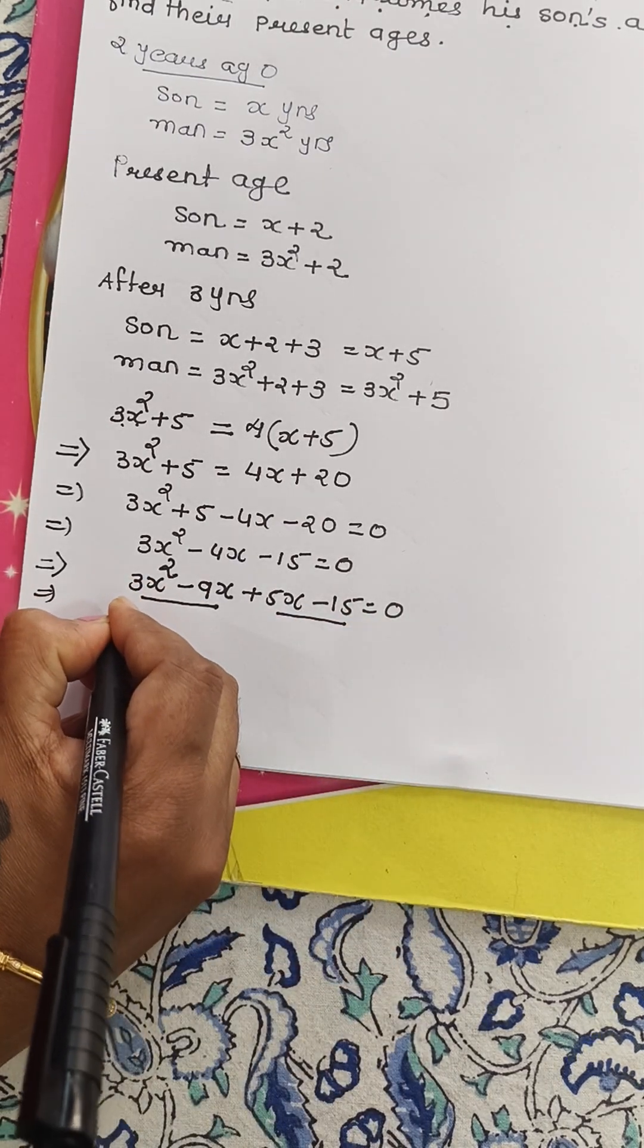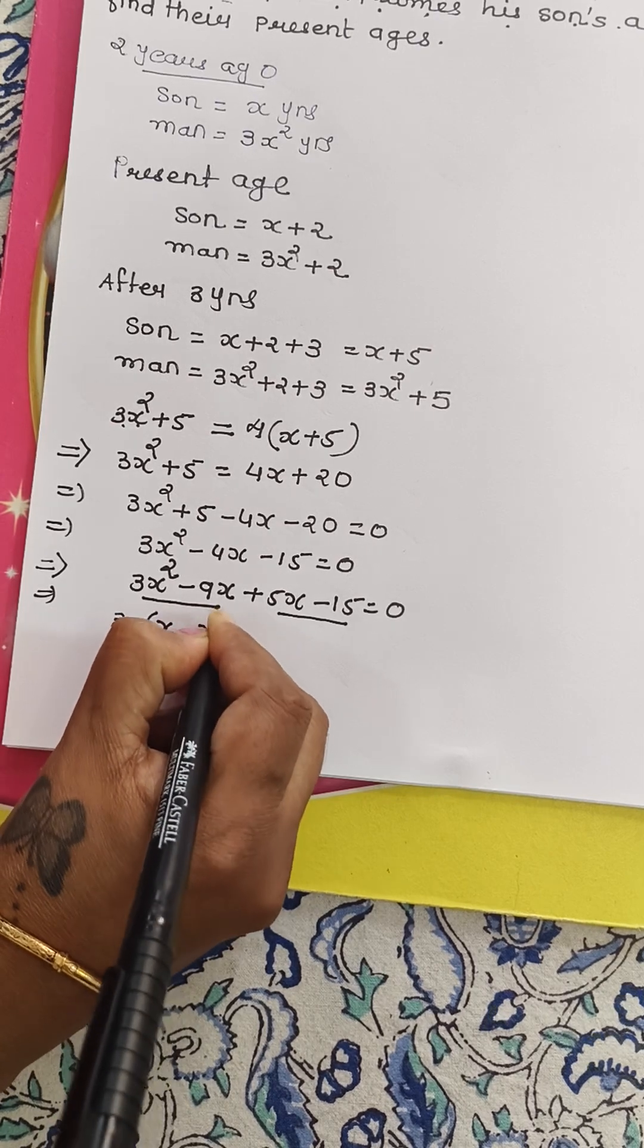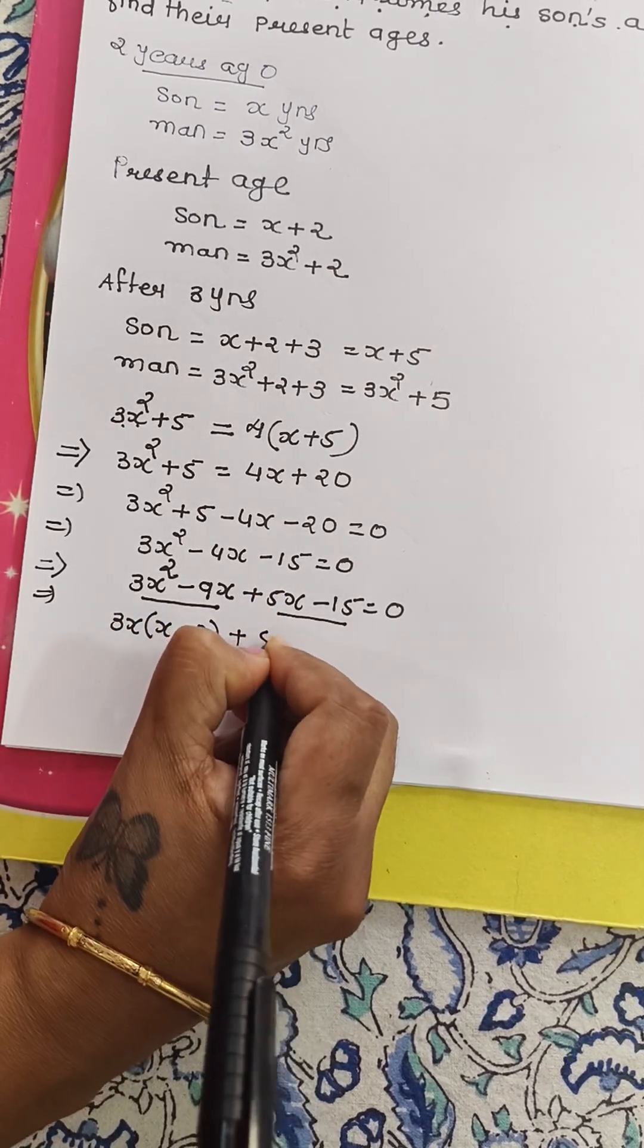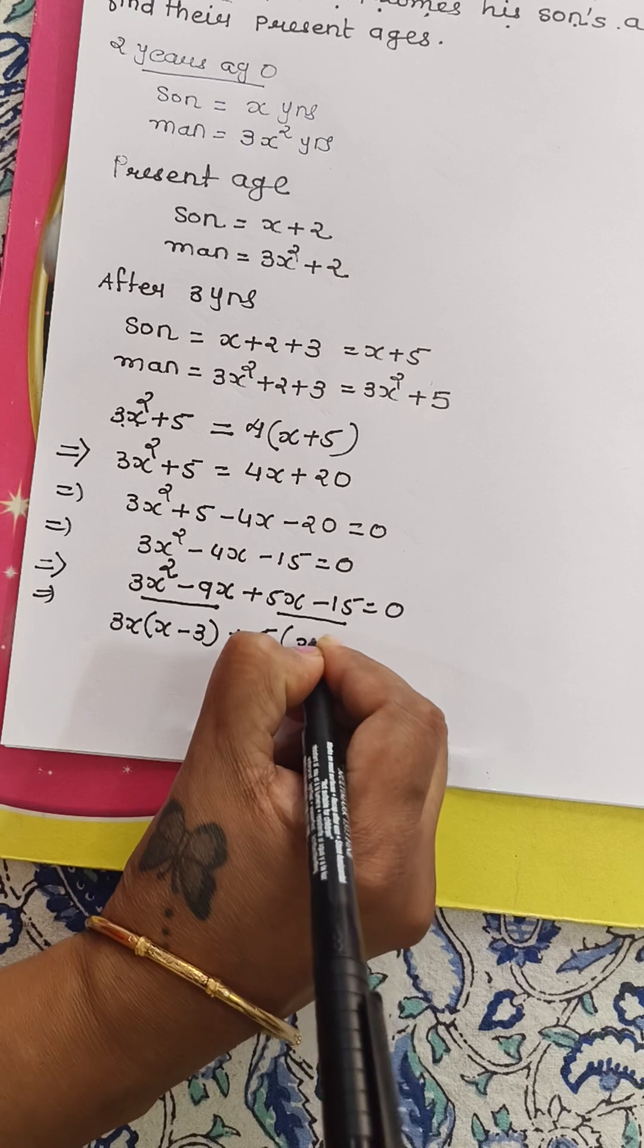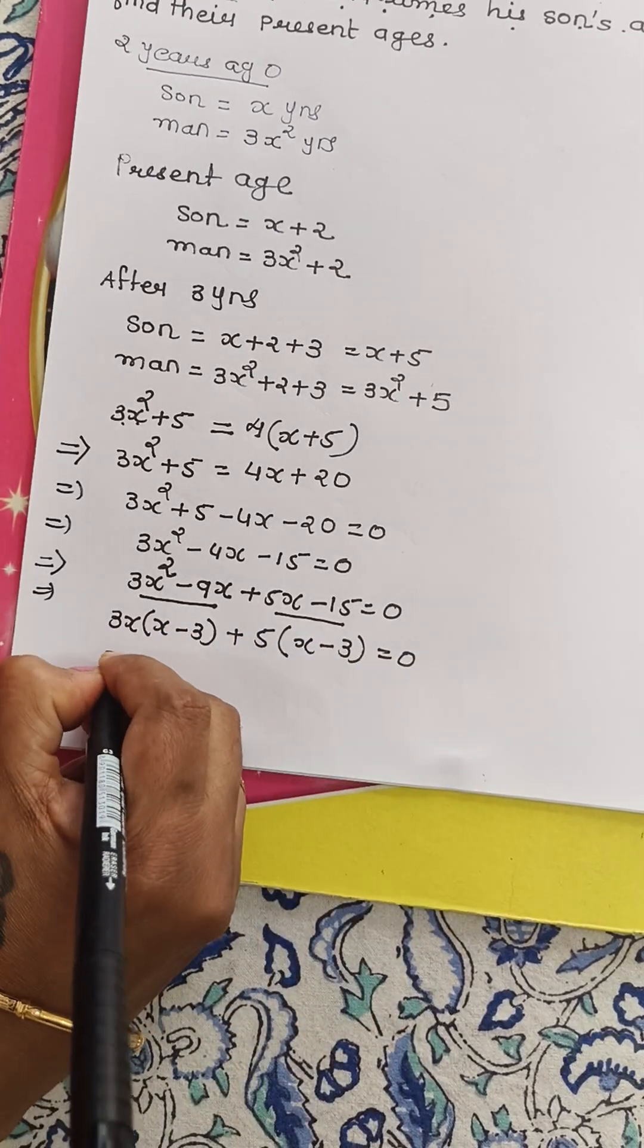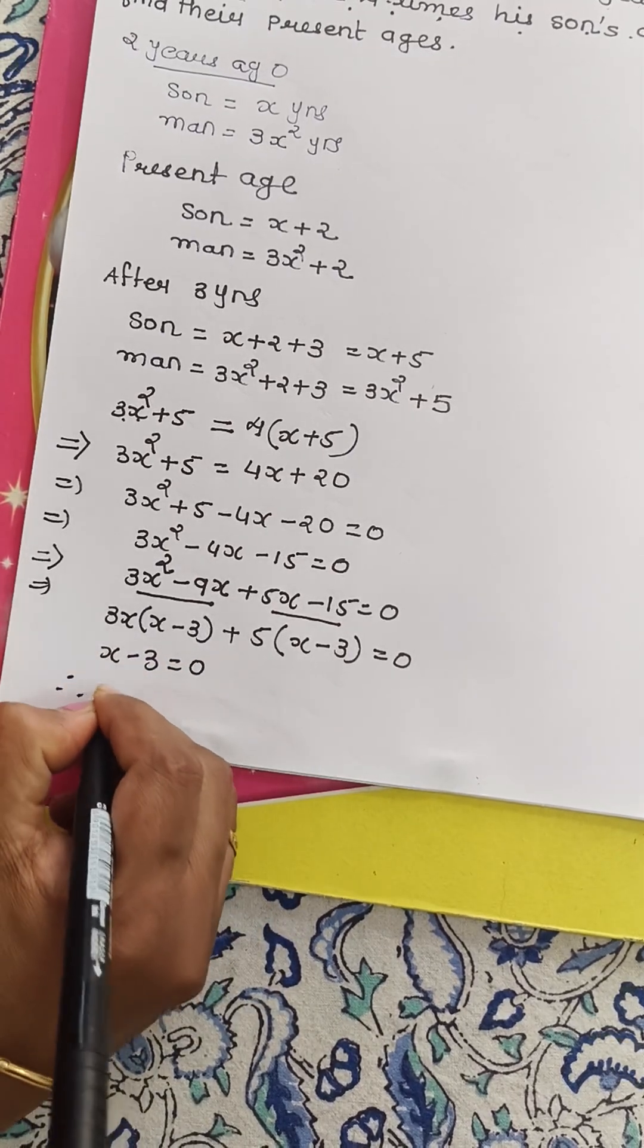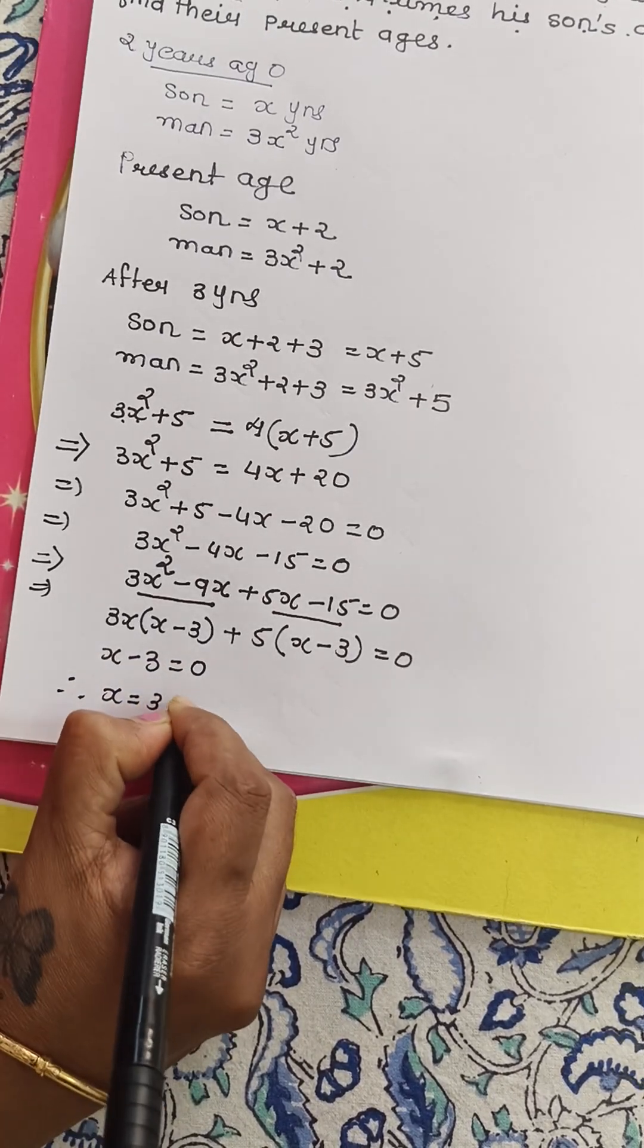So these two and this two. So let's take out common 3X. So it will be X minus 3 in the bracket plus 5 is common here. So X minus 3 equals to 0. Therefore, X is equal to 3 years.